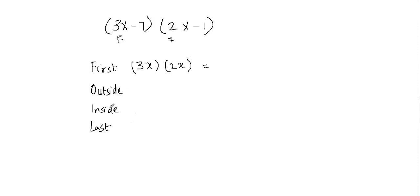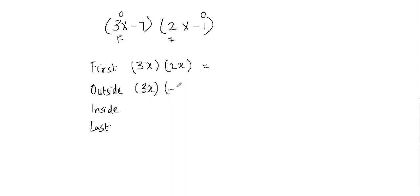Then we'll identify the outside terms and multiply them together. The outside term from this binomial would be 3x and the outside term from this binomial would be negative 1. See how they're on the outer edges — that's why they're outside terms. So we have 3x from the first binomial and negative 1 from the second binomial.